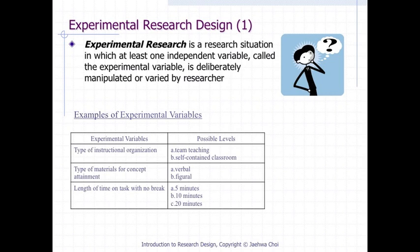The definition of experimental research is a research situation in which at least one independent variable, called the experimental variable, is deliberately manipulated or varied by a researcher. The table illustrates examples of experimental variables. Researchers must define or decide the levels of the experimental variable and assign subjects into those defined levels.